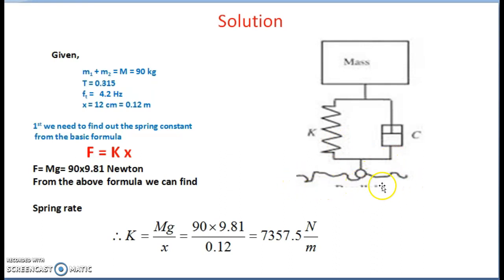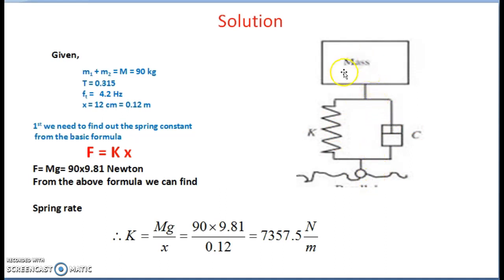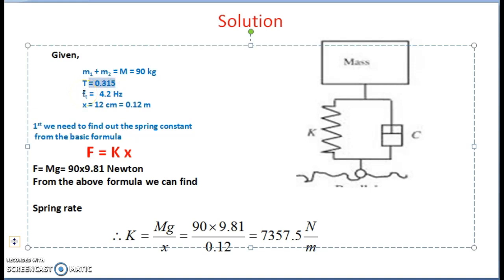The seat is connected to the tractor chassis. The tractor chassis produces vibration, and this vibration has to pass through the spring and damping system so that minimum vibration is transmitted to the operator. The given transmissibility is 0.315, the tractor chassis frequency is 4.2 Hz, and the spring deflection is given as 12 cm.